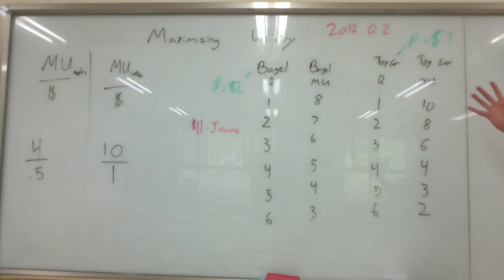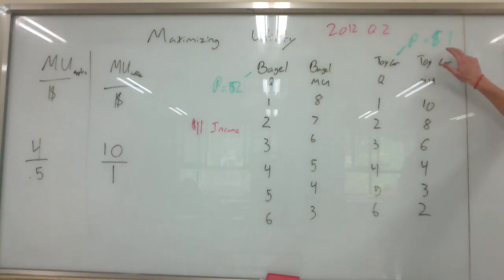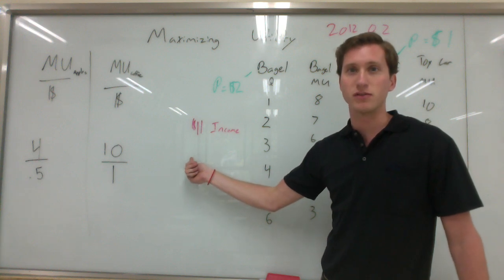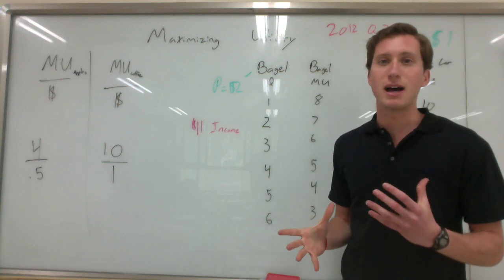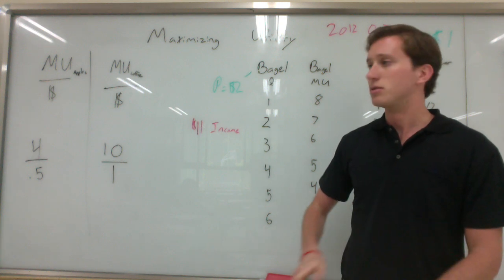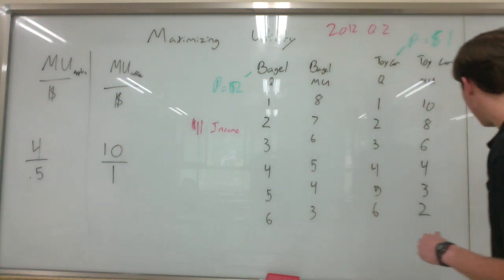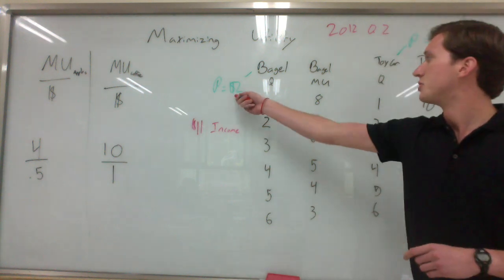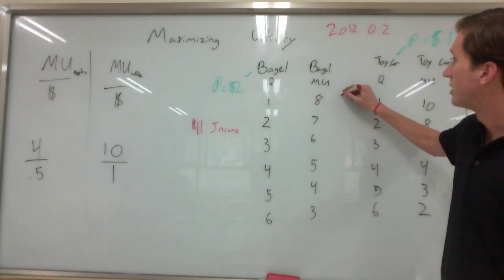Now you've got to think about the bagel costs $2, a toy car costs $1. This person has $11 worth of income. So what we want to be able to do is we want to try to maximize our utility. The marginal utility per dollar has to equal each other for these two products. So for bagel, $2, marginal utility is $8. So we know the marginal utility per dollar is $4.